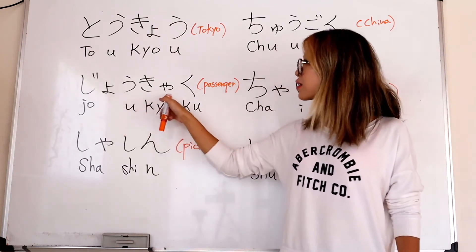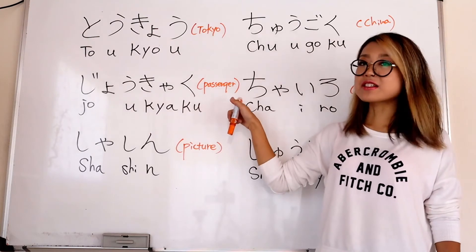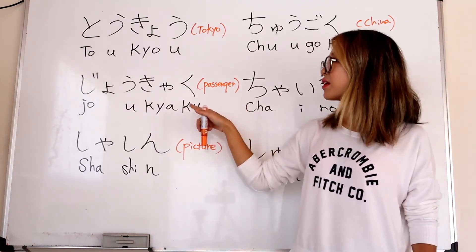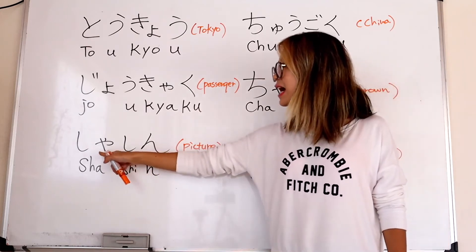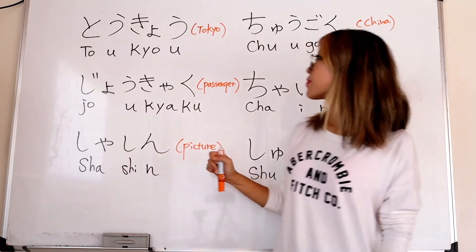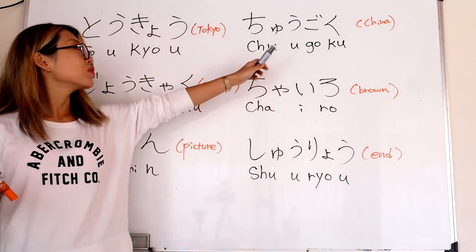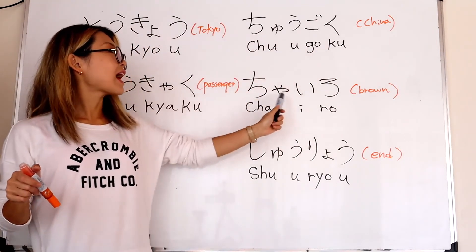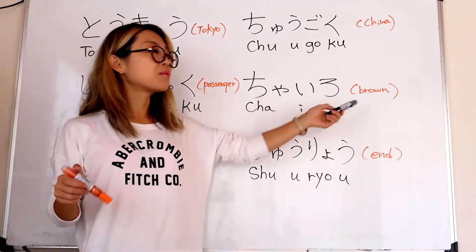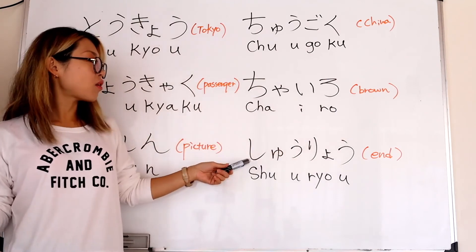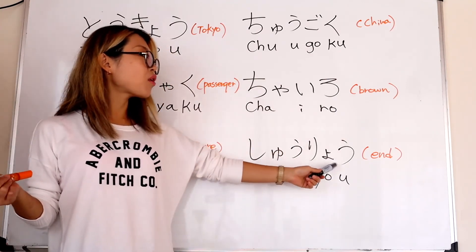Joukyaku — passenger. Shashin — picture. Chugoku — China. Chairo — brown color. Shuuryou — end.